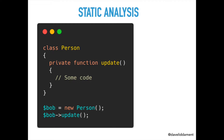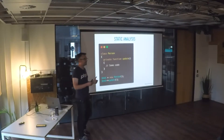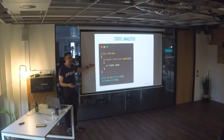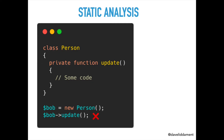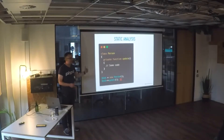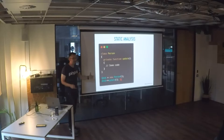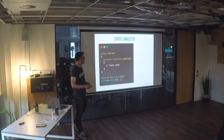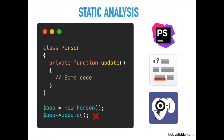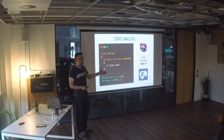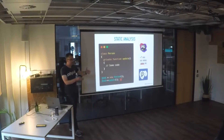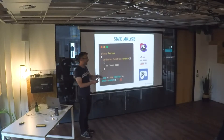But there are bugs where we don't actually need to run the code to see the problem. If you understand what 'private' means, you can look at the code and say 'I can see there's a problem when we call update, it's never going to work.' This is static analysis — just looking at the code, reasoning about it, and finding problems. Tools like PHPStorm, Psalm, and PHPStan are static analyzer tools.